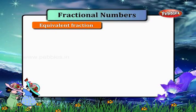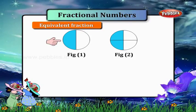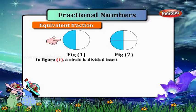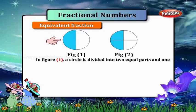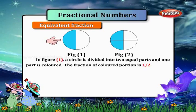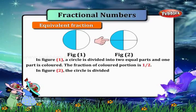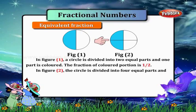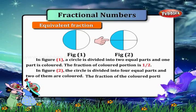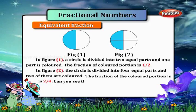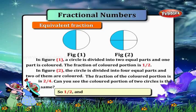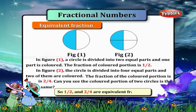Equivalent fractions. Now there are two figures here, figure one and figure two. In figure one, a circle is divided into two equal parts, and one part is colored. The fraction of the colored portion is one by two. In figure two, the circle is divided into four equal parts, and two of them are colored. The fraction of the colored portion is two by four. Can you see the colored portion of the two circles is the same? So, one by two and two by four are equivalent fractions.